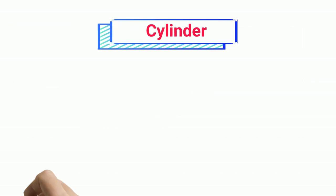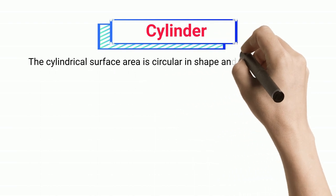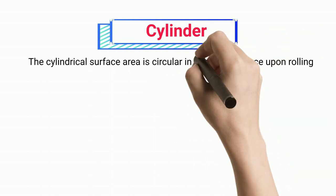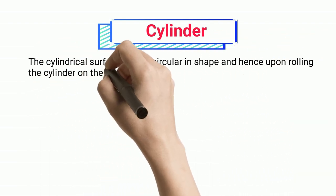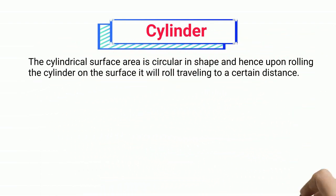Cylinder. The cylindrical surface area is circular in shape, and hence upon rolling the cylinder on the surface it will roll, traveling to a certain distance.